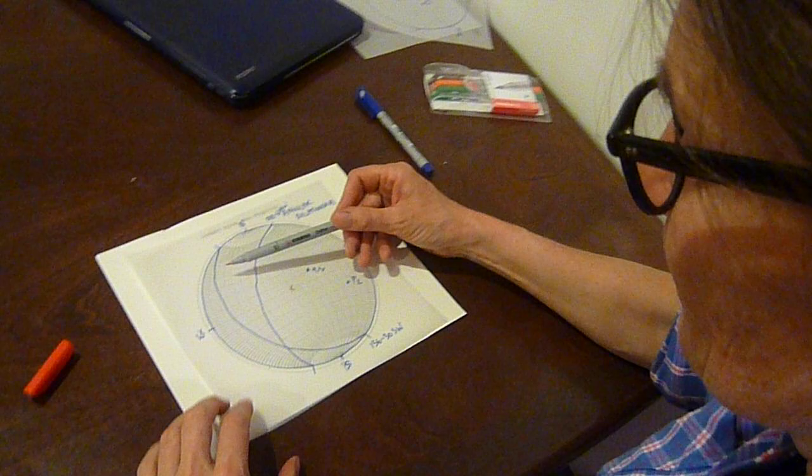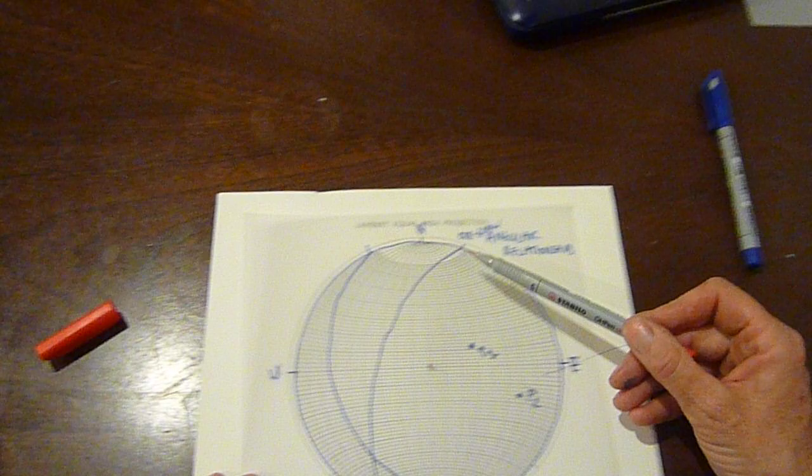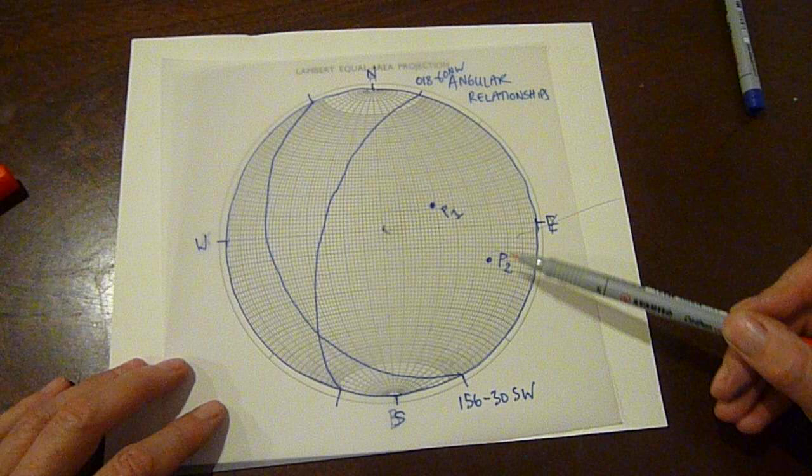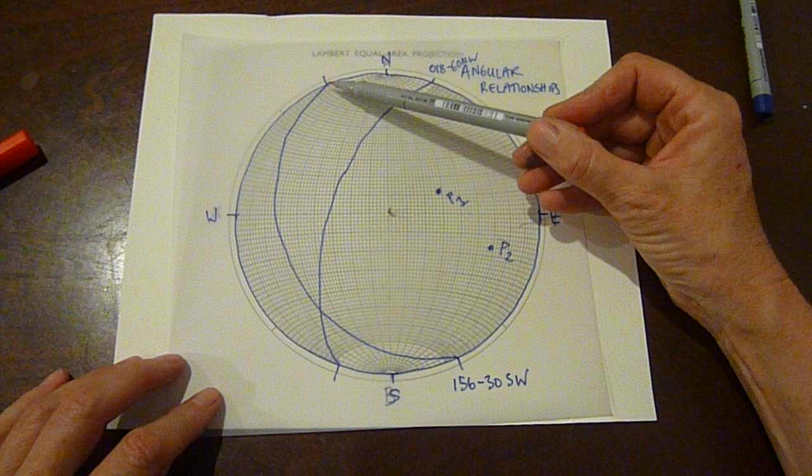So if you have a look here, what I've done is I've constructed two planes on the stereonet and I've also drawn their poles. I've plotted the plane 018° 60° northwest, that's this one here, and this is its pole. And I've also plotted the plane 156° 30° southwest and this is its pole here. What I want to do is find out what the angle is between these two planes.